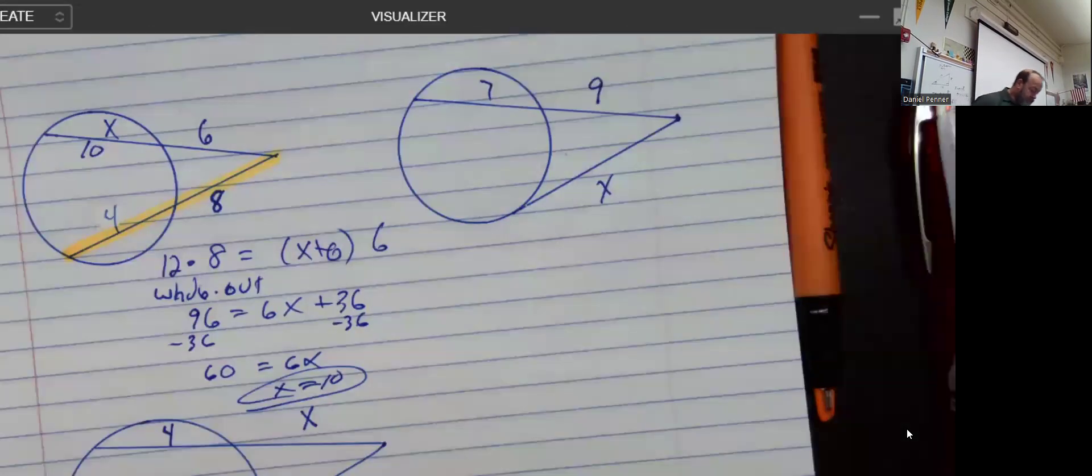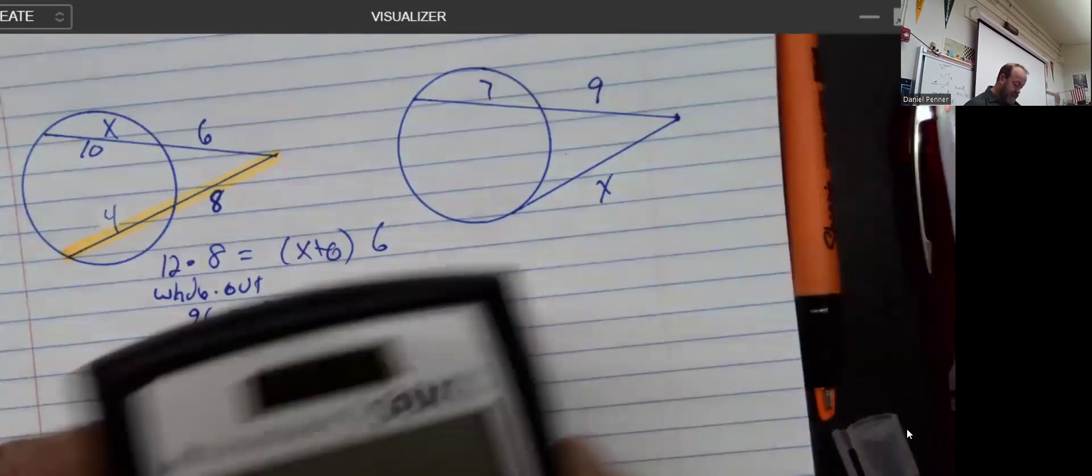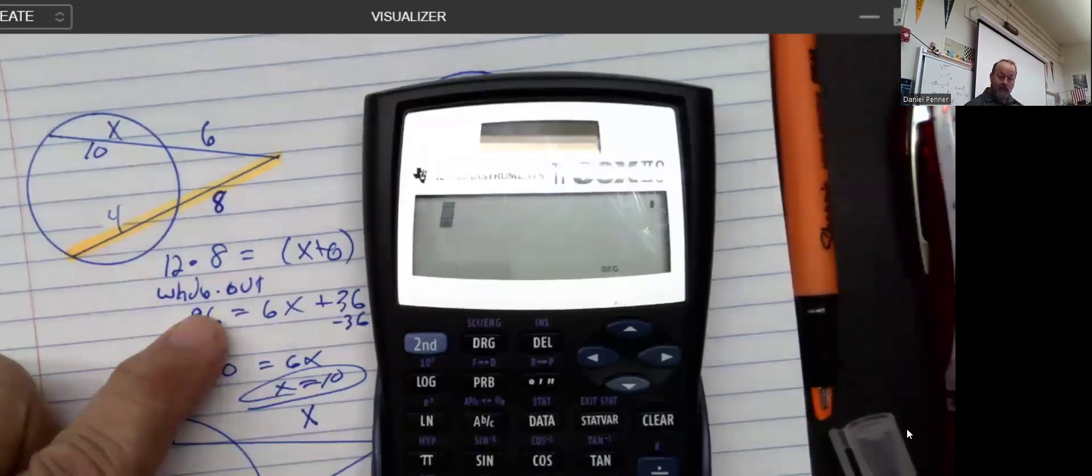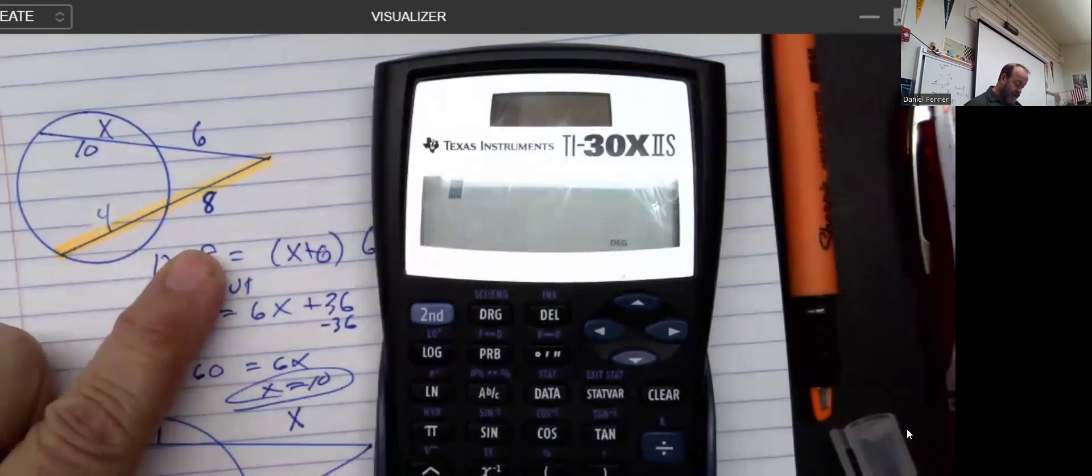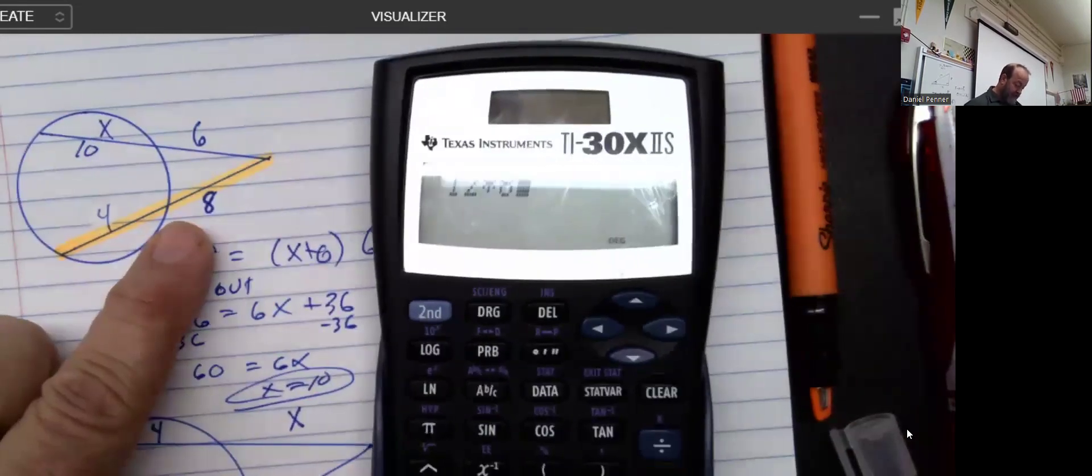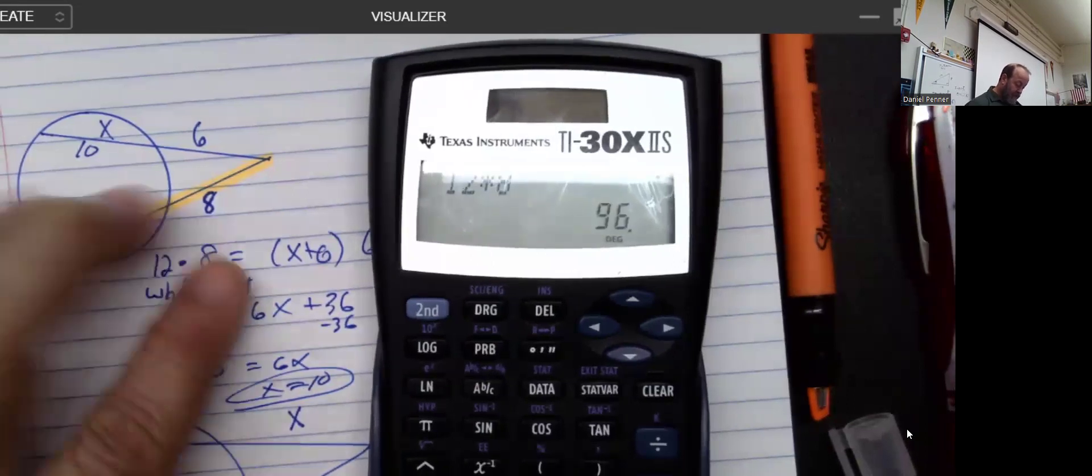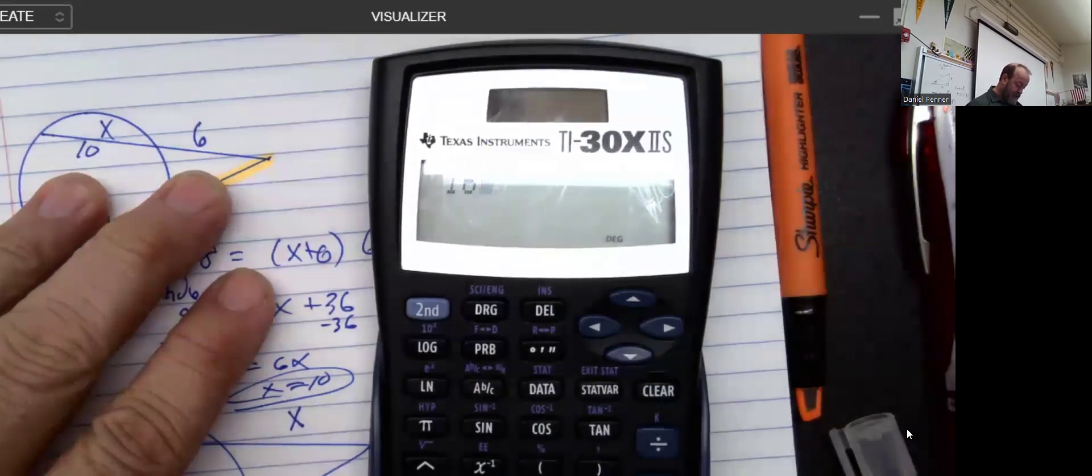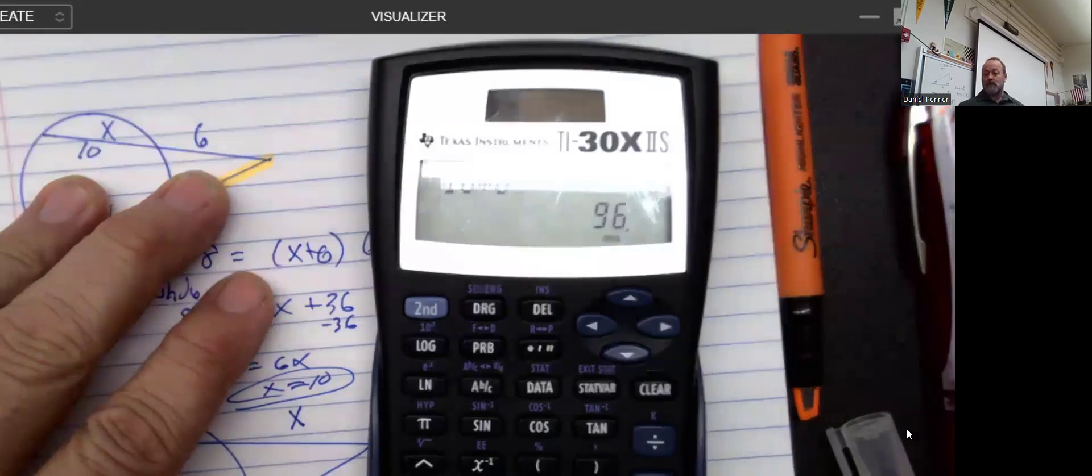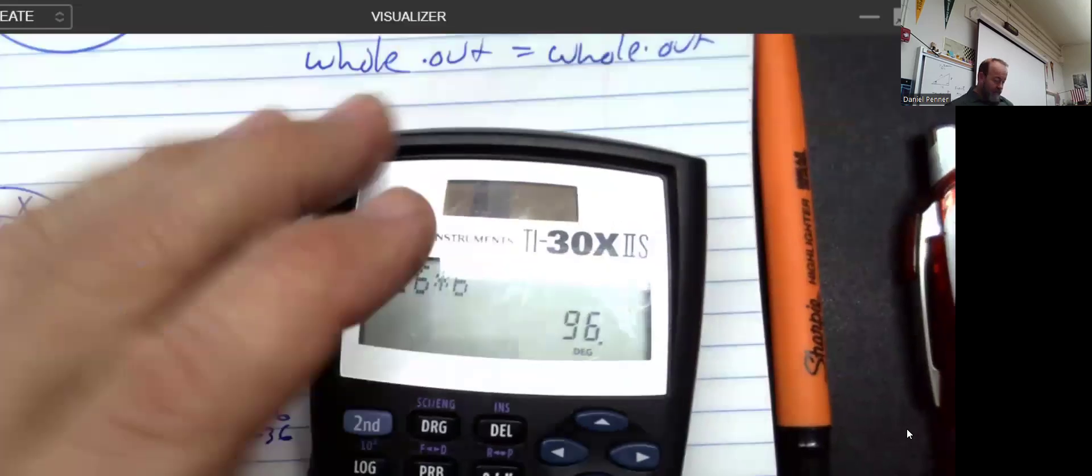According to this, the whole thing, just grabbed a calculator so I don't have to do this all in my head, the whole thing, which is 12 times the outside piece, 8, is equal to the whole thing, which is 16, times the outside piece, which is 6. And so 96 and, whoops, 96. I hit my camera. So we're good.